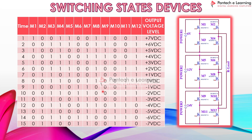Next, let's see the switching states of the devices. Each device has to be switched on at a particular time interval. The tabulation indicates we have used 12 switches: M1, M2, M3, M4, M5, M6, M7, M8, M9, M10, M11, M12. The output voltage levels are defined as 0, +1, +2, +3, +4, +5, +6, +7, and similarly −1, −2, −3, −4, −5, −6, −7. To get +1 volt we switch on the corresponding switches, and for −1 or −2 voltage we switch on the corresponding switches. Since this is a 15-level inverter, the positive cycle has 7 levels, the negative cycle has 7 levels, and the 0 level is the 15th level.